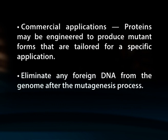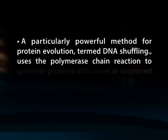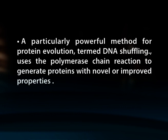The delitto perfetto technique can eliminate any foreign DNA from the genome after the mutagenesis process, and is simpler compared to other methods for in vivo site-directed mutagenesis. There is great flexibility in this approach, because after the core cassette is inserted, multiple mutations in the gene of interest can be made easily and quickly. This method can be applied to other organisms where homologous recombination is efficient, such as the moss Physcomitrella patens, DT40 chicken cells, or E. coli. Human genes can be studied and genetically manipulated in yeast by using yeast artificial chromosomes (YACs). A particularly powerful method for protein evolution, termed DNA shuffling, uses the polymerase chain reaction to generate proteins with novel or improved properties.